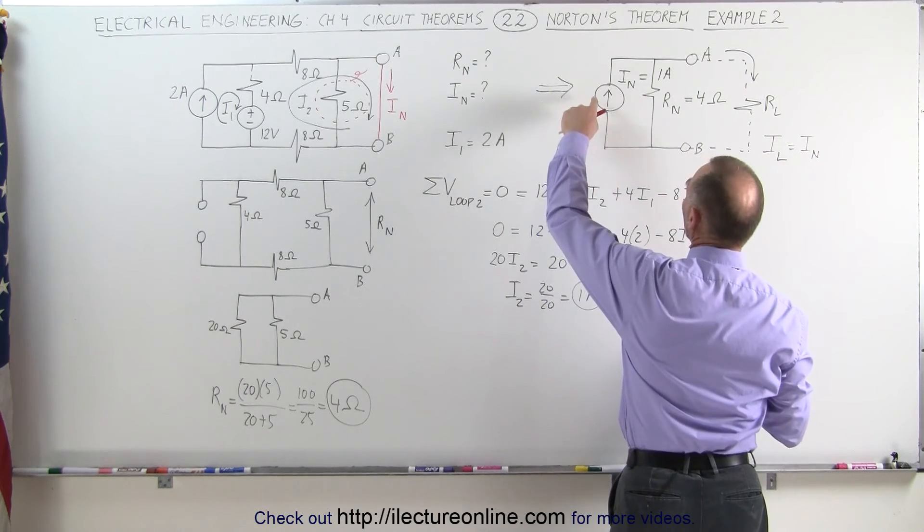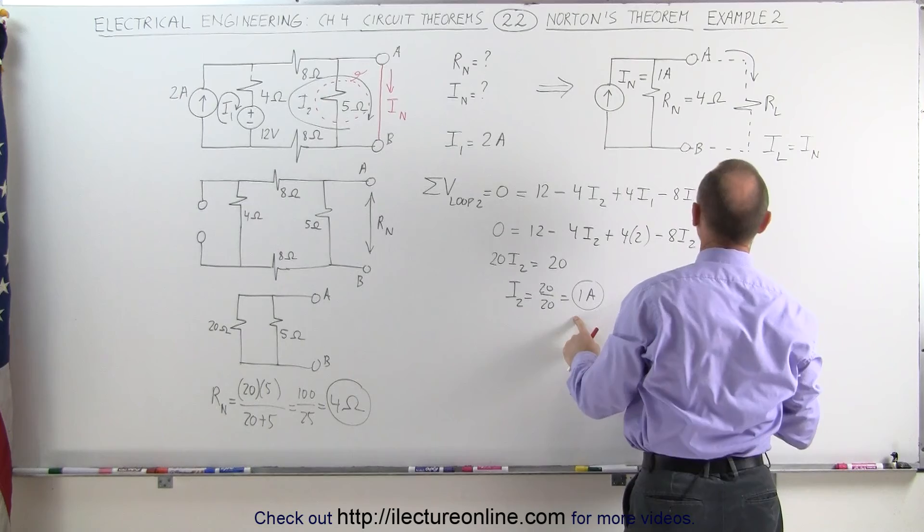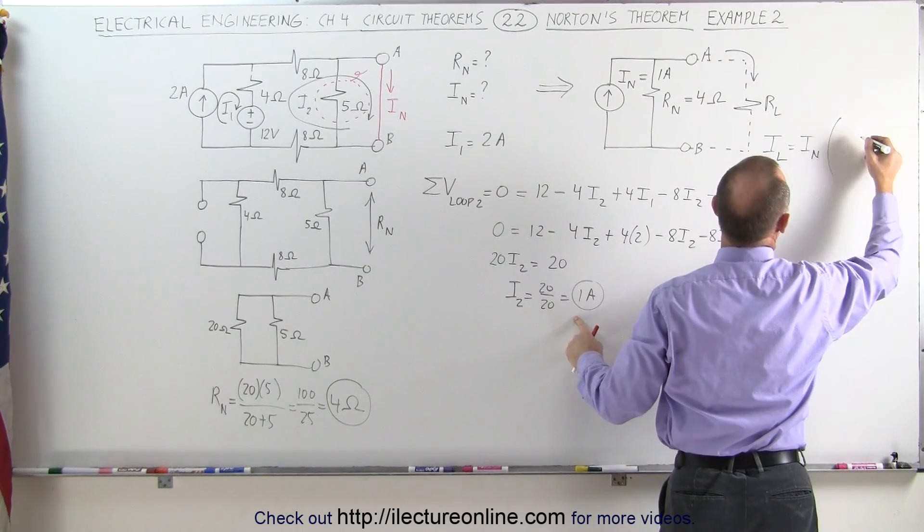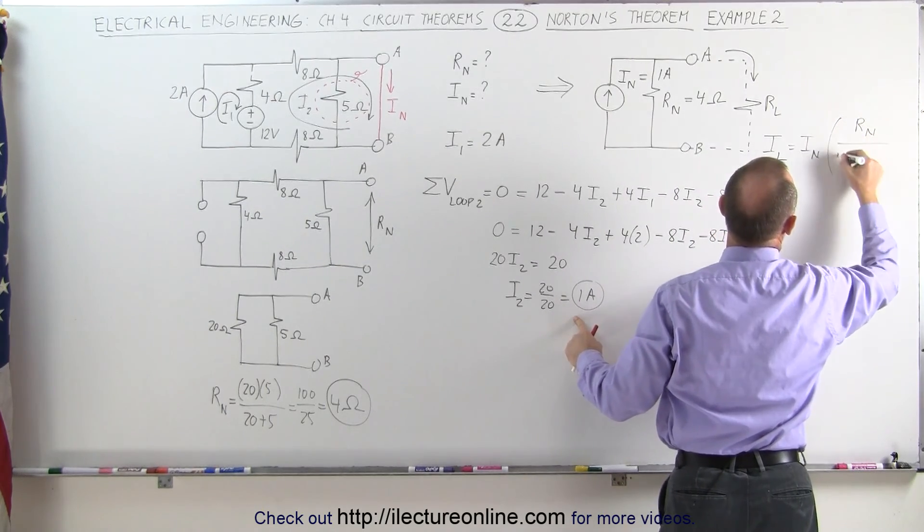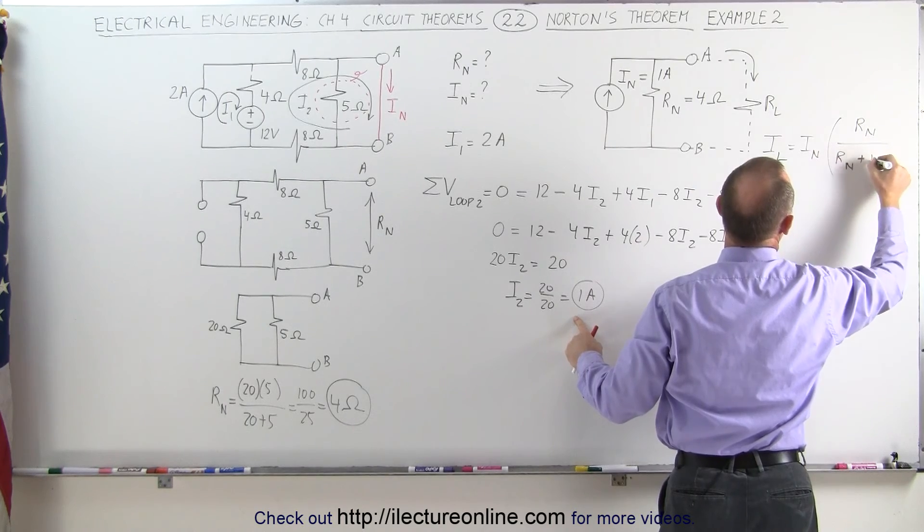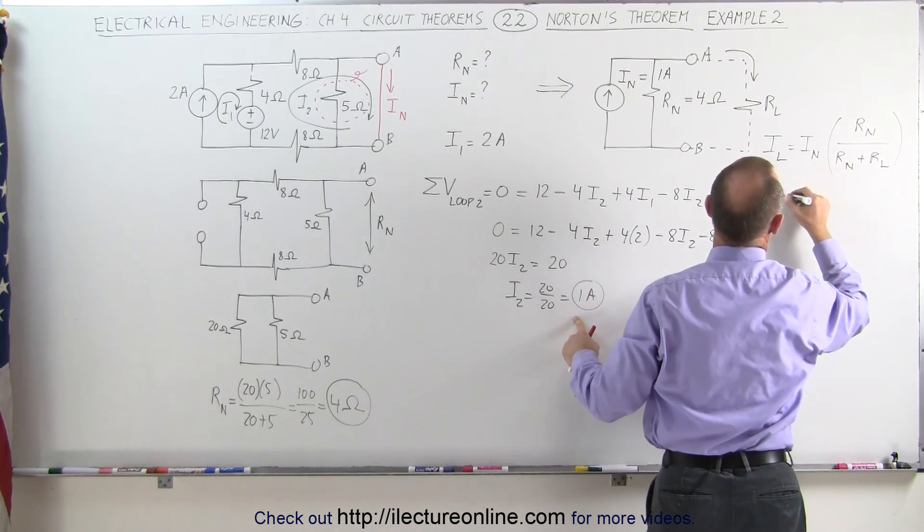We know that the current I through the load in this direction is going to be equal to I Norton. The current provided by the equivalent Norton current. In this case 1 amp.